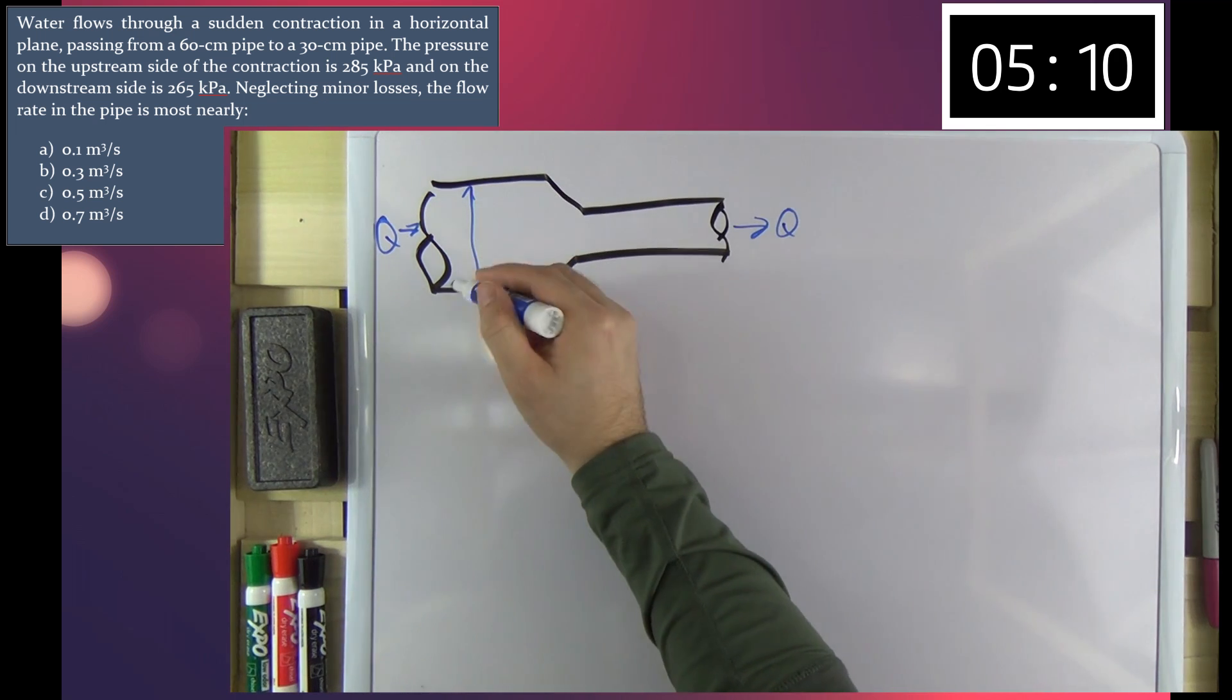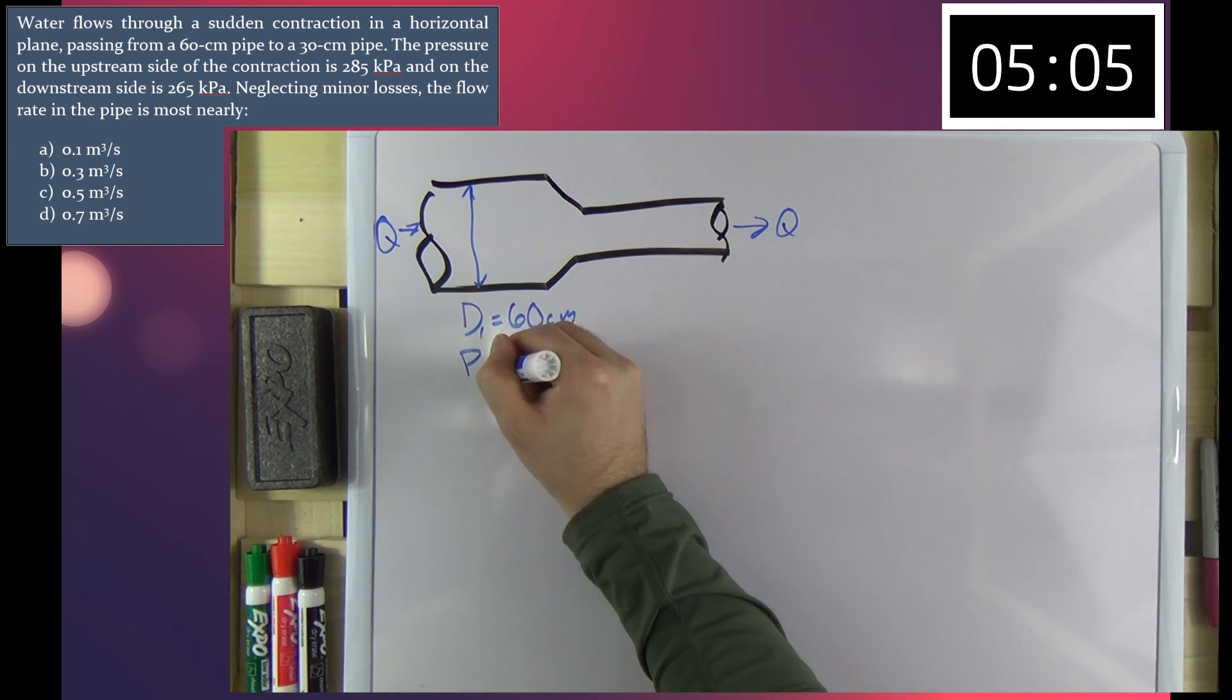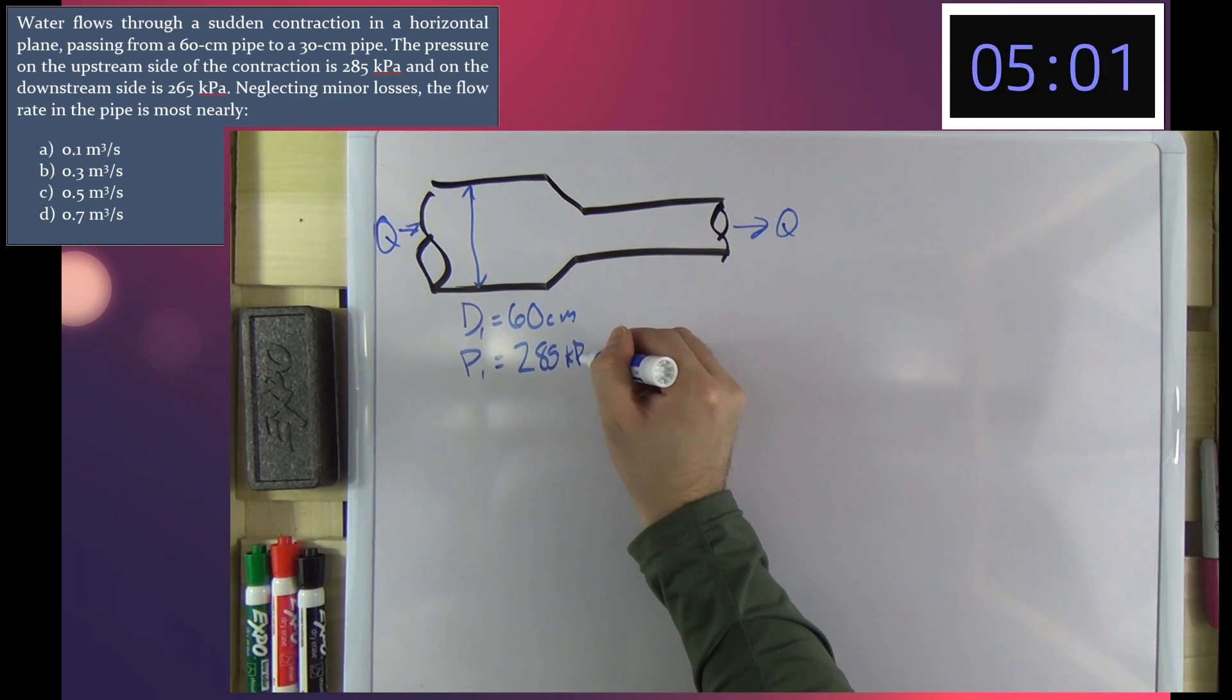We've got diameter 1 over here equal to 60 centimeters, and pressure 1 is equal to 285 kilopascals.